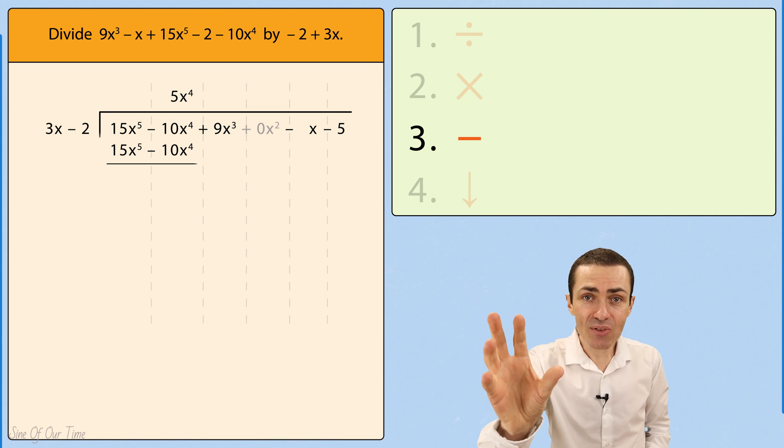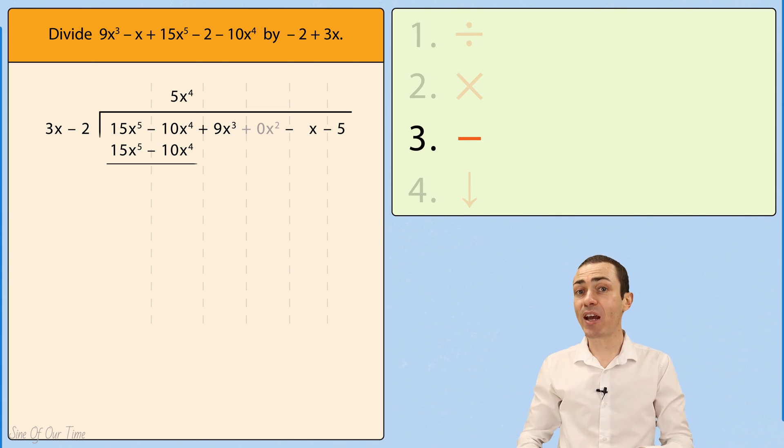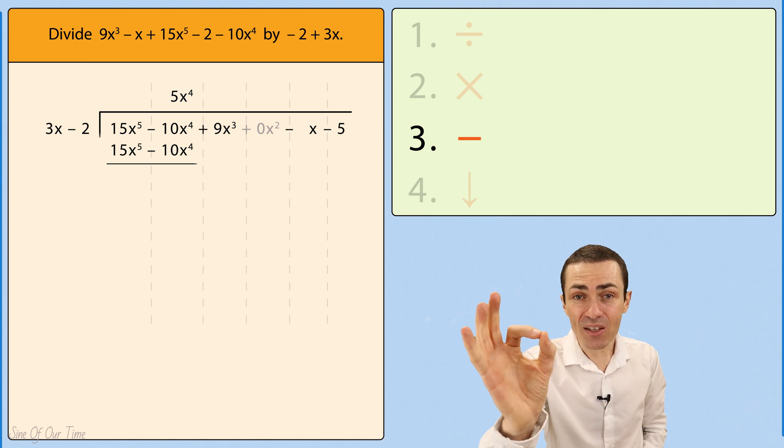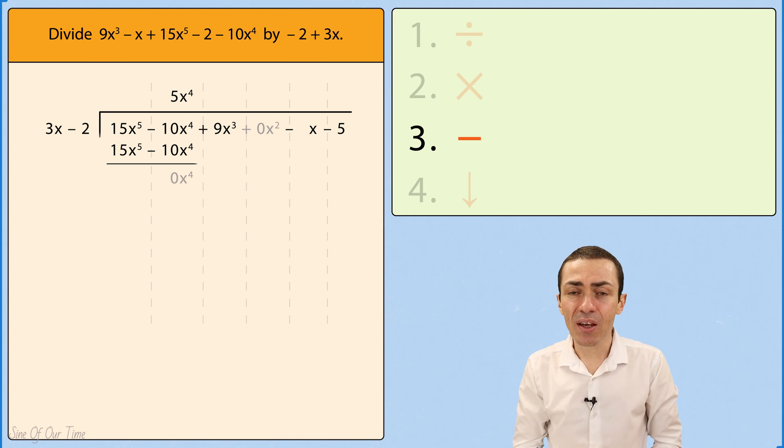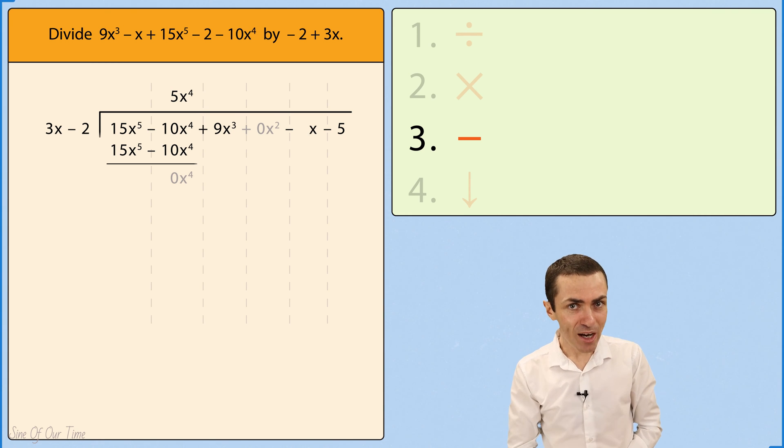However, when we take negative 10x to the power of 4, and we subtract negative 10x to the power of 4, we get 0x to the power of 4, which is unusual because usually we always have something at the end of our second subtraction.